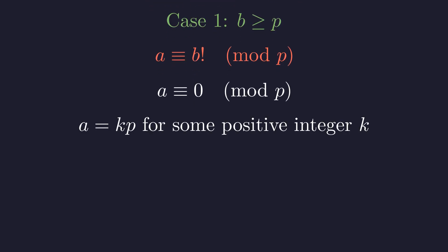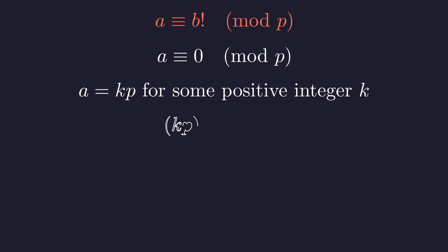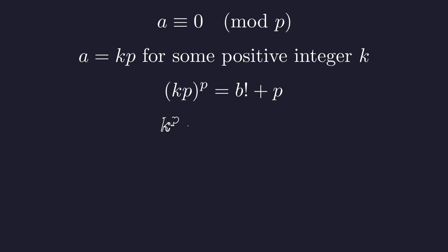Since A is a multiple of P, we can write A as K times P for some positive integer K. Substituting this back into our original equation gives us K times P, all raised to the power P, equals B factorial plus P. Expanding the left side, we get K to the power P times P to the power P equals B factorial plus P.